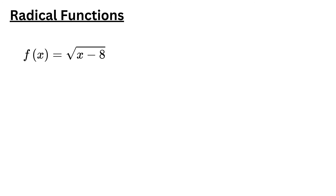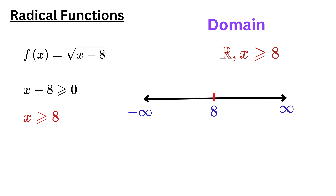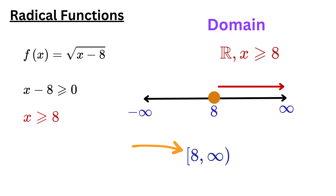For the first function to be defined, x minus 8 must be greater than or equal to zero. Solving this inequality shows that x is greater than or equal to 8. Therefore, the domain is all real numbers greater than or equal to 8. On a number line, mark a closed circle at 8, indicating that 8 is also included. Then shade the line to the right to show all values greater than 8 are included. The domain can be written in interval notation as [8, positive infinity). The square bracket around 8 indicates that 8 is included in the domain.